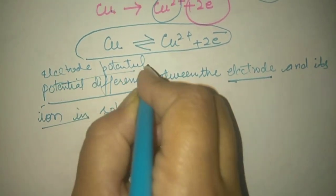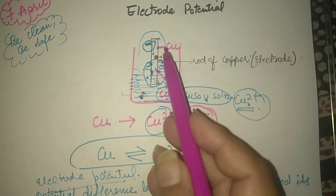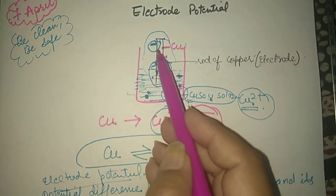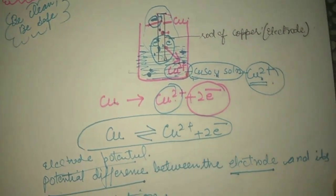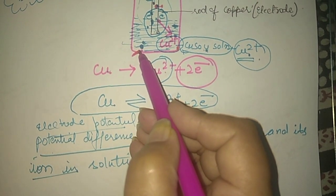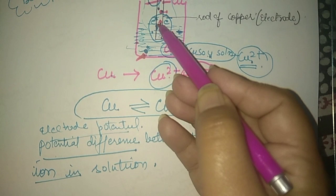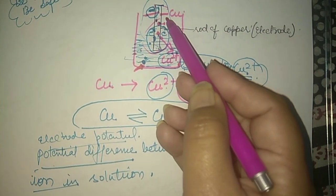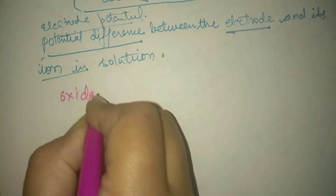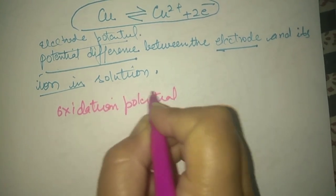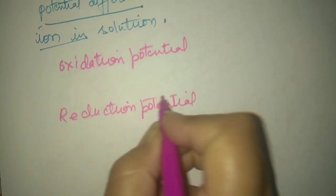That is electrode potential. Now, we have seen that the metal electrode loses electrons which accumulate on the electrode, giving it a negative charge, and positive ions go into solution. The opposite of this can also happen — the positive ions in the solution can take up electrons from the electrode, and the resulting metal ions accumulate on the electrode, imparting a positive charge. As a result, there are two types of electrode potential: oxidation potential and reduction potential.